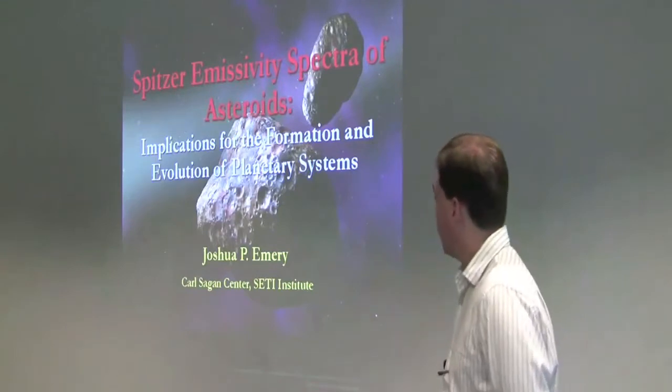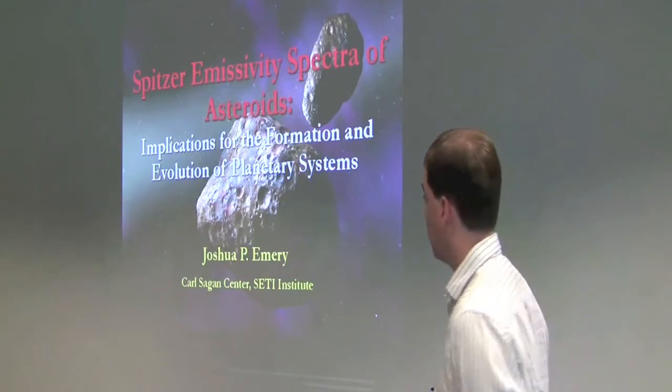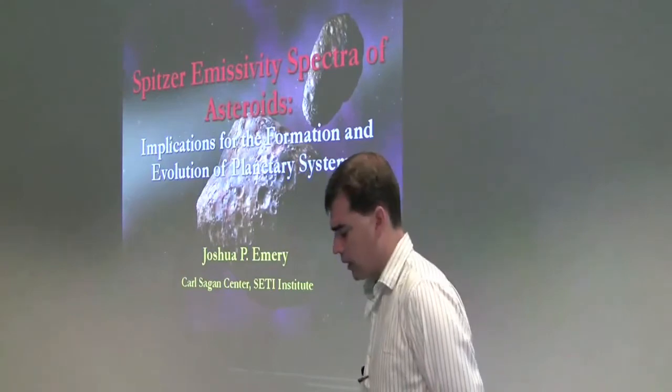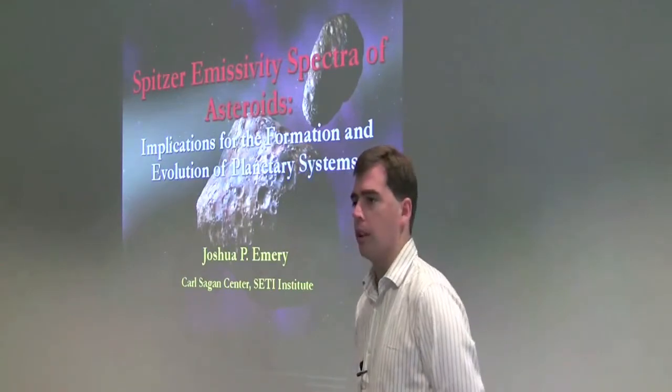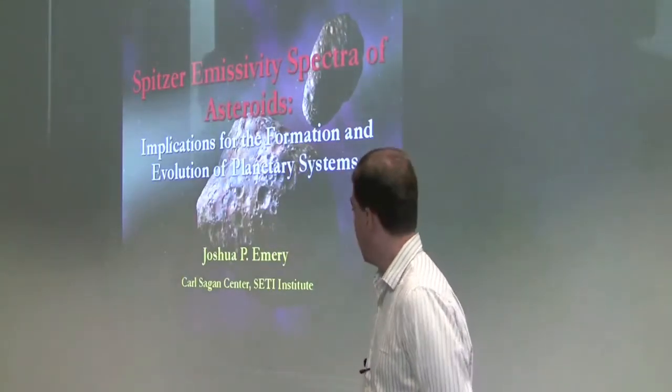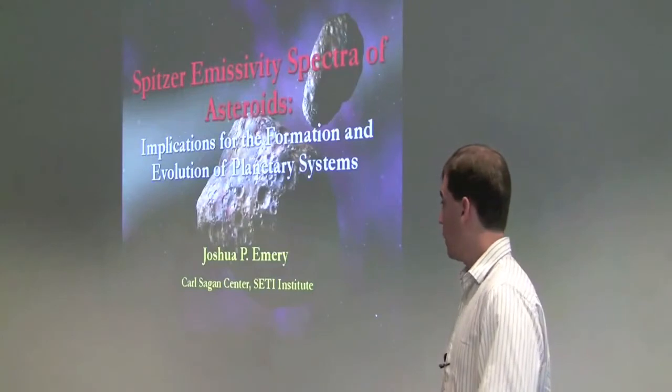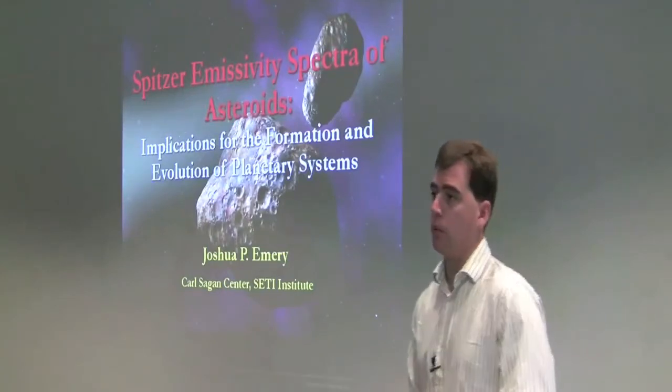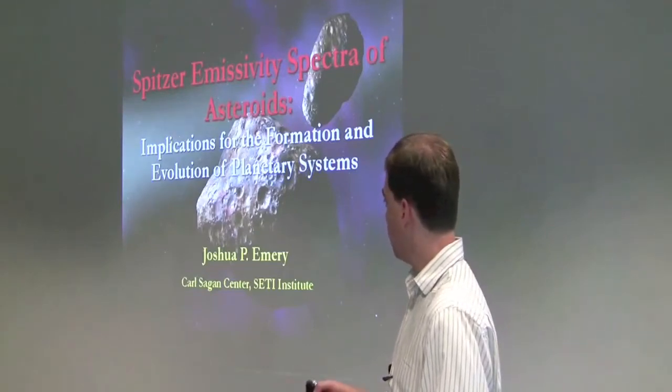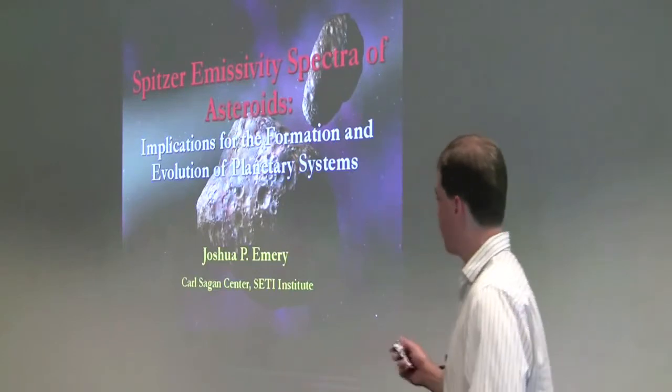Today, I'll be discussing thermal infrared spectral observations of asteroids with the Spitzer Space Telescope. These data were taken as part of a variety of programs with different specific science goals. But as a group, as a whole, the observations also provide important constraints for the formation and dynamical evolution of our solar system and also the opportunity to compare ours with other planetary systems. I've used that as sort of a unifying theme for this talk.